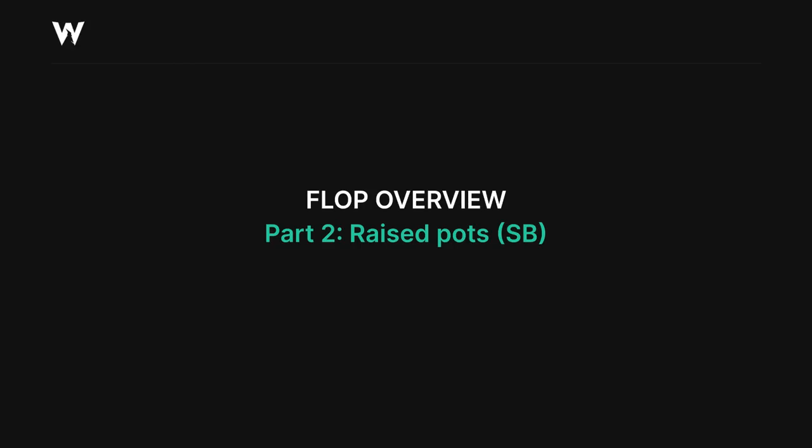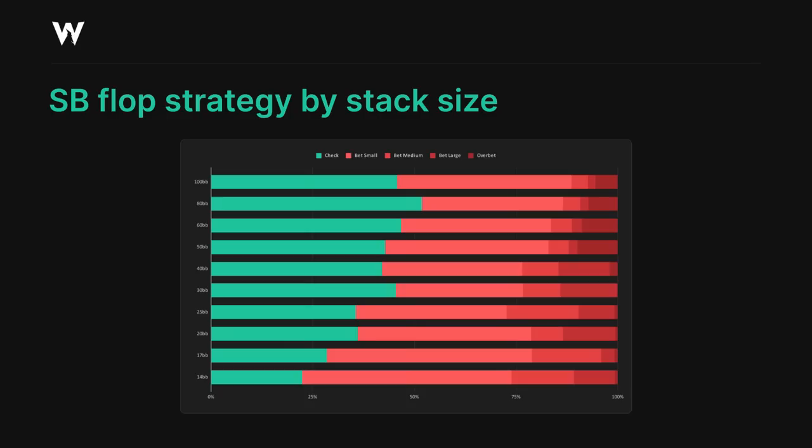If we move on to looking at the small blind's strategy in raised pots, there are a few obvious differences we'll notice right away. First of all, the trend of being more passive at middle stacks disappears. We're able to be quite aggressive in raised pots at all stacks. In fact, we become more aggressive as stacks get shallower, in a fairly linear way — this is just because as stack to pot ratio gets lower, we become more focused on denying equity to the big blind when we're out of position.